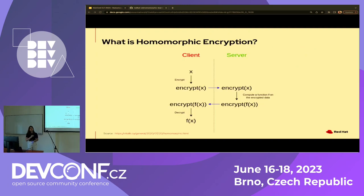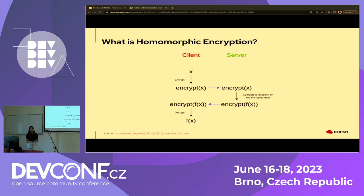Let's move towards homomorphic encryption. I would assume that most of us know what encryption is, but I'd like to take a moment to explain. It's basically a way of scrambling data so that only certain authorized parties have access to what that data actually means. And homomorphic encryption is basically the process where we can perform computation on this encrypted data.